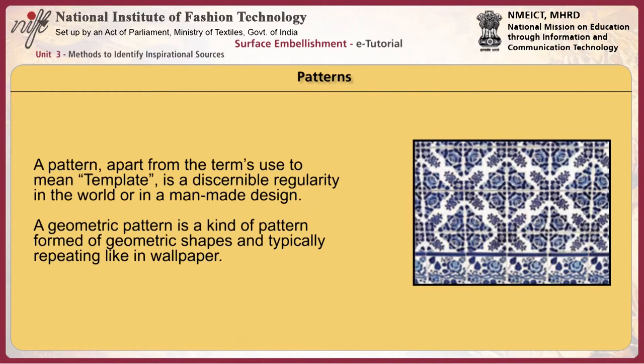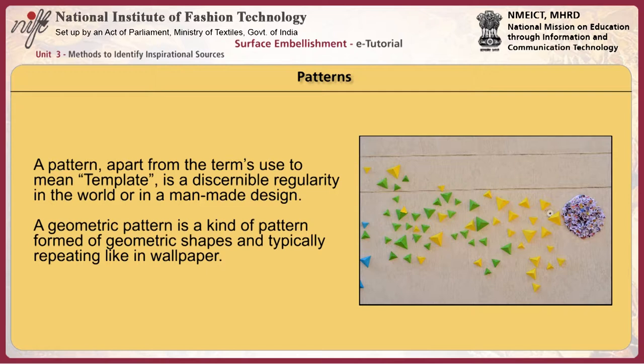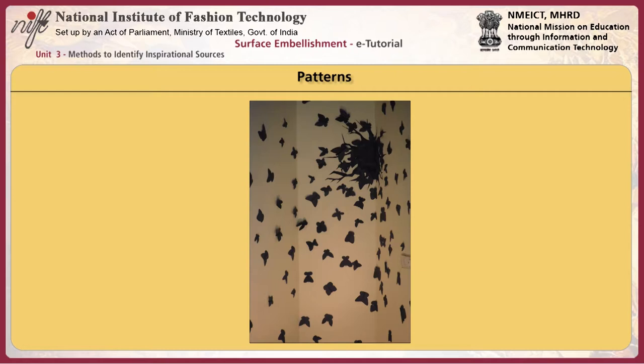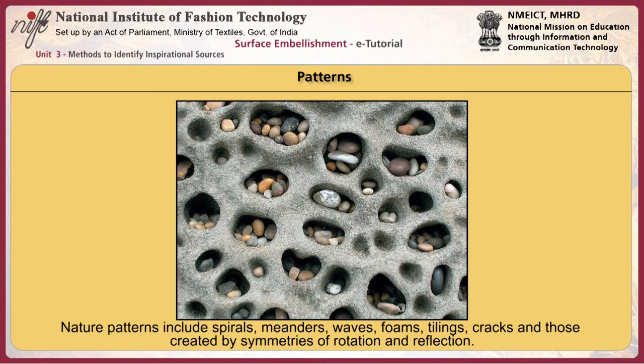A pattern, apart from the term used to mean template, is a discernible regularity in the world or in a man-made design. The elements of a pattern repeat in a predictable manner. A geometrical pattern is a kind of pattern formed of geometrical shapes, typically repeating like in wallpaper. Any of the five senses may directly observe patterns. Abstract patterns in science, mathematics or language may be observable only by analysis. Visual patterns are widespread in nature and art. Visual patterns in nature are often chaotic, never exactly repeating, or often involve fractals.